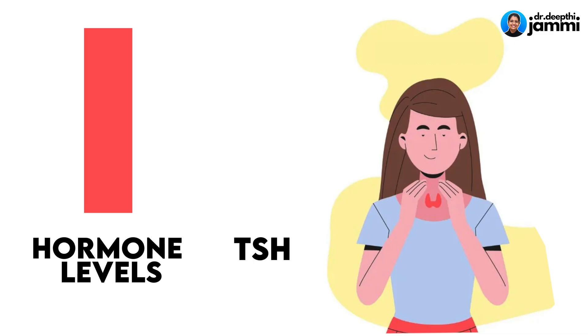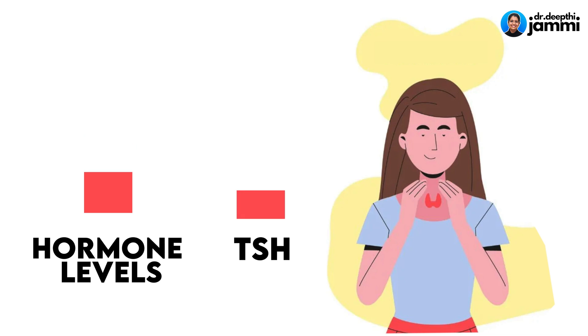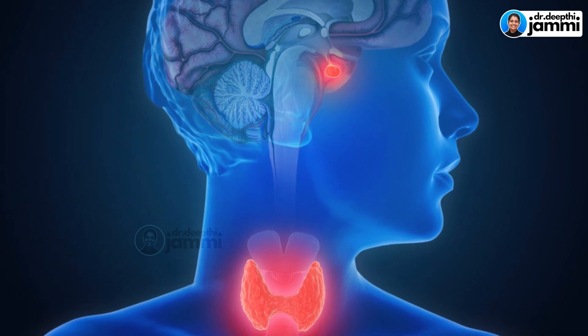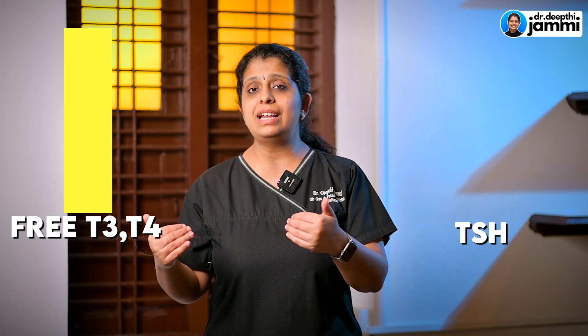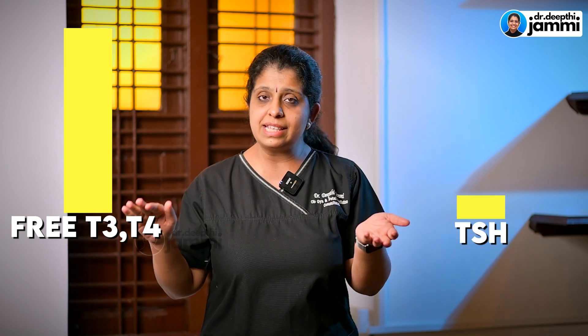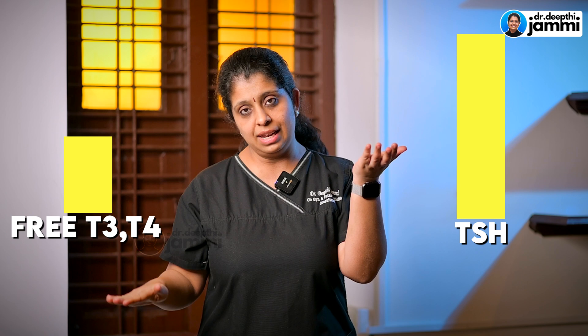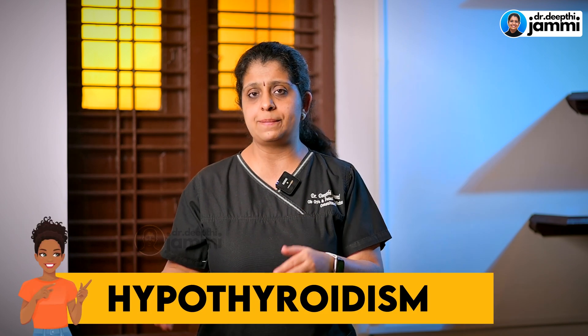If you have high thyroid hormone levels, then TSH levels will be reduced. The brain produces TSH, but the thyroid gland does not produce adequate hormones, so Free T3 and T4 levels are also reduced. This is called hypothyroidism.